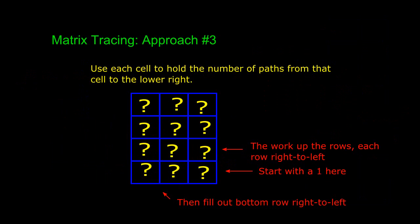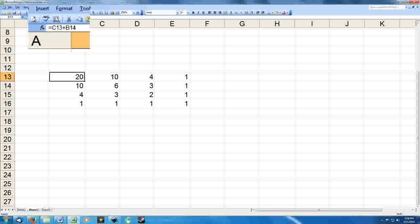Of course, if a cell doesn't have a neighbor to the bottom or to the right, that has to be accounted for. But I tested the basic idea, and it worked. I didn't write a program for it, though. I tried it out in a spreadsheet.